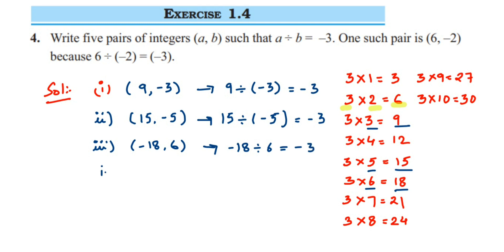The next pair you can take is 24 and 8. So you can take (-24, 8) because -24 divided by 8 equals -3.